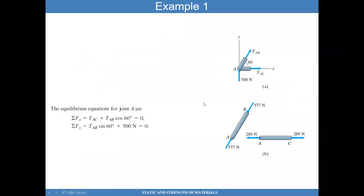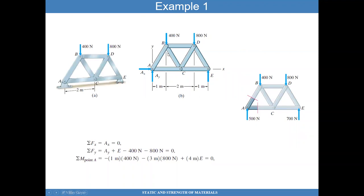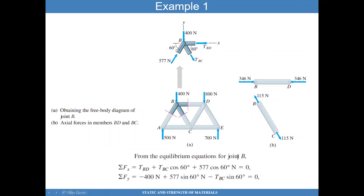Now we move to joint B. I can do a cut there, a cut here, and a cut here. I know the load along AB from the previous step. I don't know TBC or TBD. When I do a cut, I know the compression in AB; I don't know TBC or TBD. TBD is aligned with the X direction so it does not need to be decomposed. TBC can be decomposed into TBC cosine 60 in X and TBC sine 60 in Y, negative direction. Summing forces in X and Y directions, I can solve for TBD and TBC, giving the tension loads across BD and BC.